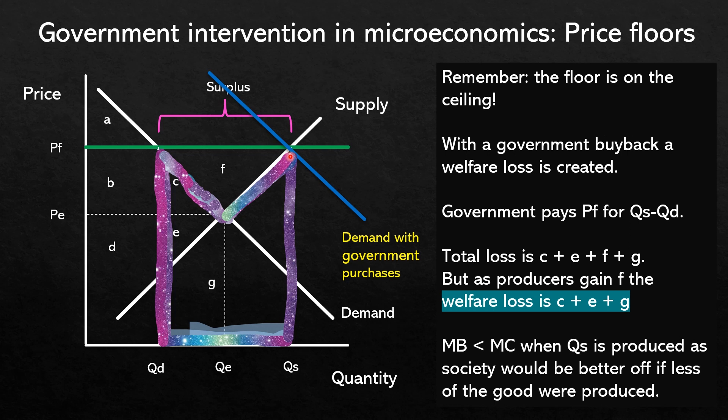The welfare loss represents the allocative inefficiency caused by the over-allocation of resources to the production of this good. Marginal benefit is less than marginal cost when QS is produced, because society would be better off if less of the good were produced.